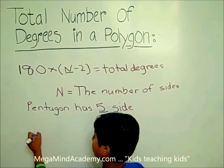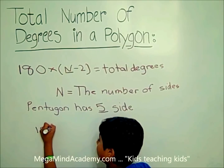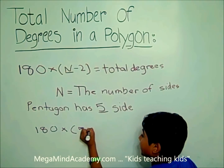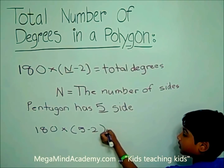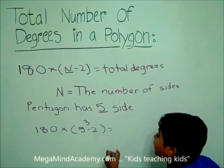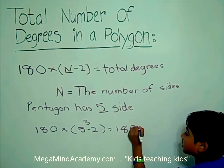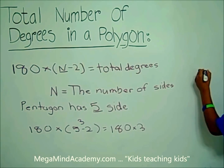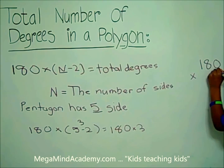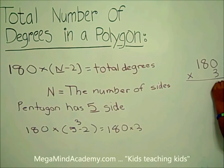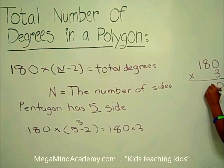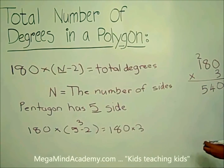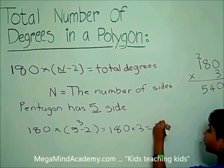So it would be 180 times (5 minus 2). Five minus two equals three, so it is 180 times three. 3 times zero is zero, 8 times three is 24, and 3 times one is three plus two equals five. So 180 times three equals 540 degrees.